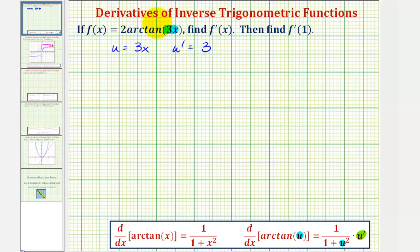So now we can think of this as finding the derivative of two times arctangent u, and therefore f prime of x would be equal to two times the derivative of arctangent u, which would be equal to one divided by the quantity one plus u squared, where u is equal to three x, so we have three x squared times u prime, where u prime is three.